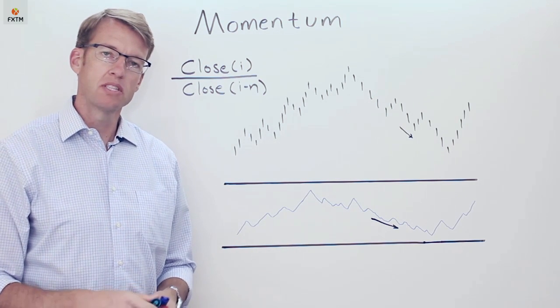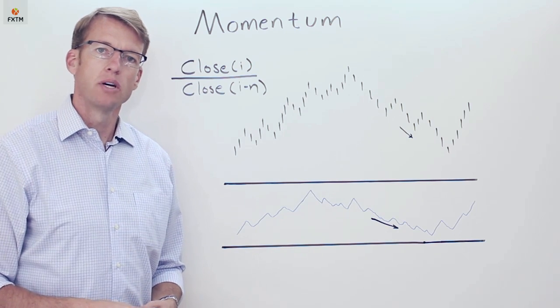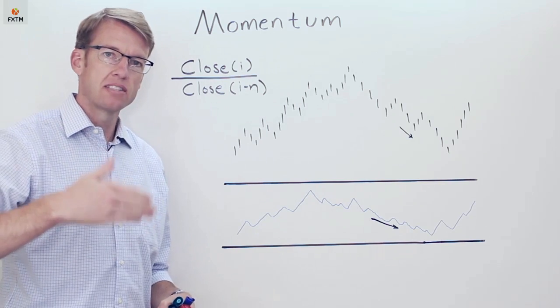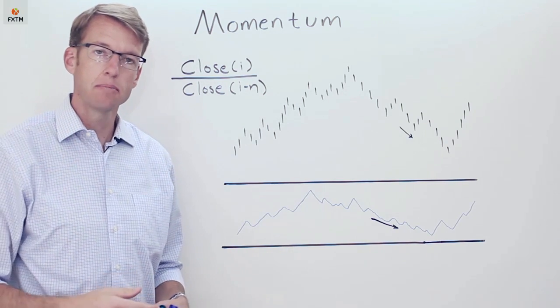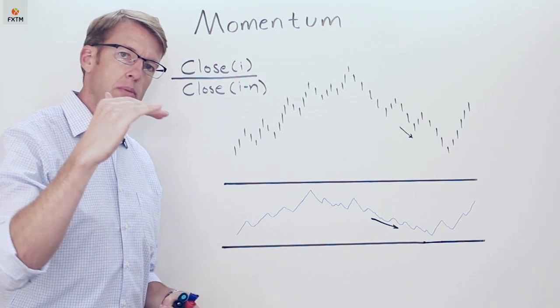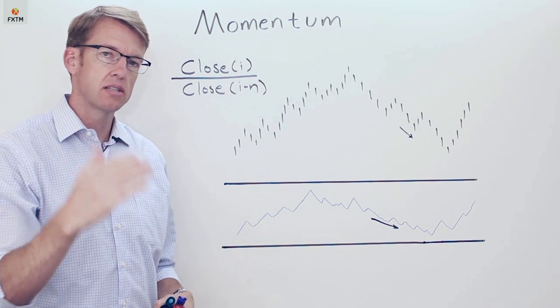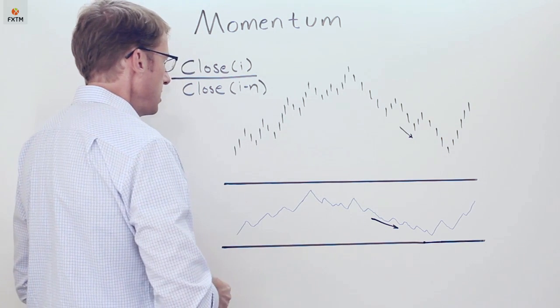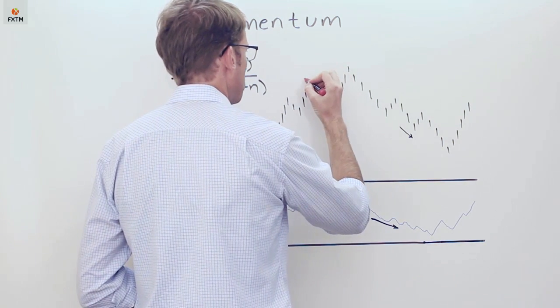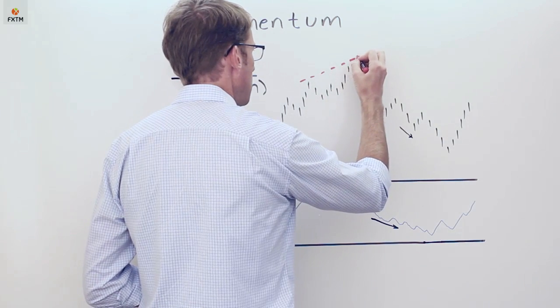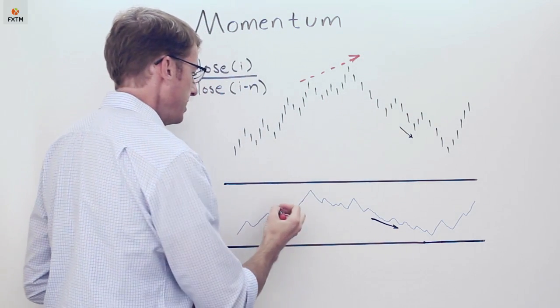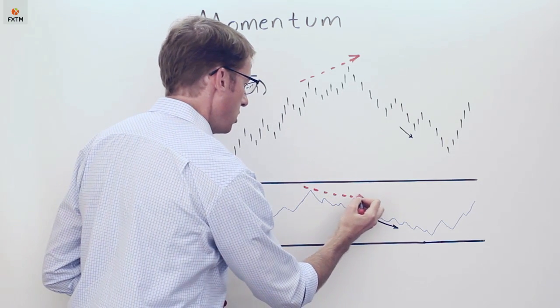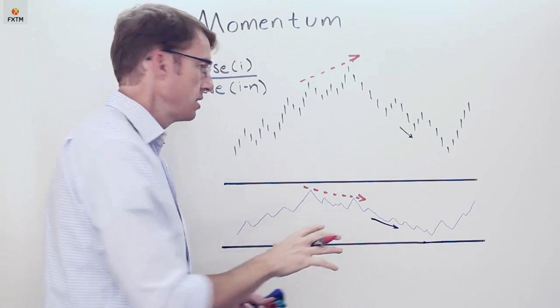So as an example what we look for specifically would be a period of time when the momentum oscillator tends to reach an extreme high when prices have been moving very quickly to the upside and then it forms a lower high later while the price actually makes a higher high. So you can see an example of this here in my sketch of a price chart that I have higher tops on the price while at the same time the momentum oscillator is forming lower tops on the oscillator itself.